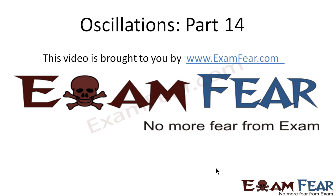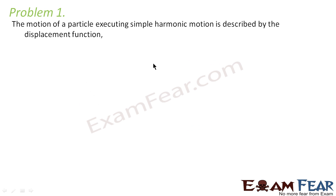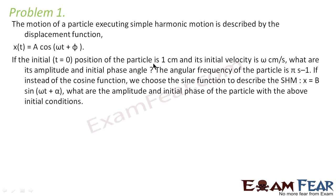Hello friends. This video on oscillations part 14 is brought to you by examfear.com — no more fear from exam. Please make sure you have watched all the videos till part 13 before going ahead with part 14. The motion of a particle executing simple harmonic motion is described by the displacement function x = A cos(ωt + φ). If the initial position of the particle is 1 cm and its initial velocity is ω cm per second, what is its amplitude and initial phase angle? The angular frequency of the particle is π per second.